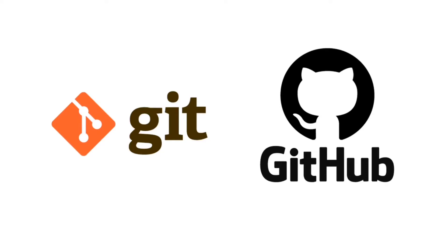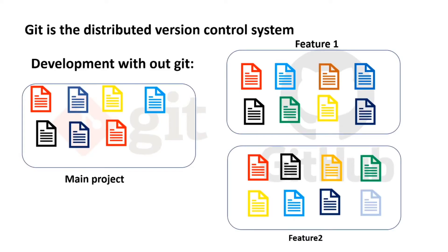So let's see what is Git. Git is a distributed version control system. Let's skip the word 'distributed' for now — so what is a version control system?